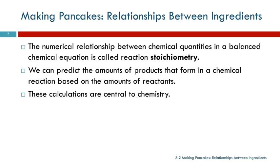We're going to talk about making pancakes — hope you're not hungry. The numerical relationship between the quantities in a balanced chemical equation is called stoichiometry, or reaction stoichiometry. This is where we look at: if we have five grams of this starting ingredient, how many grams of the product can we make? Maybe I'm a manufacturer and I have a kilogram of this compound and I want to make five kilograms of something — is this going to be enough? These are very practical questions, and these types of calculations are really, really important for chemistry.